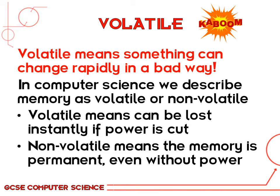In computer science you might hear the term 'volatile' used. Volatile basically means something that can change quickly in a bad way — you might have heard the word used in chemistry or to describe a wild animal. In computer science we describe memory as either volatile or non-volatile. Volatile memory means it can be lost instantly if the power is cut, so if you turn off the computer the memory will be wiped. Non-volatile memory means it's permanent even without power.